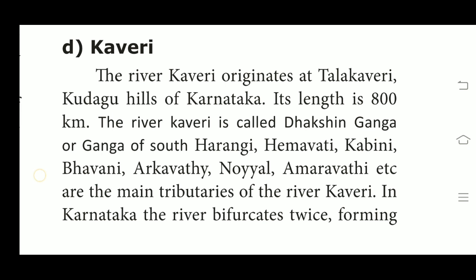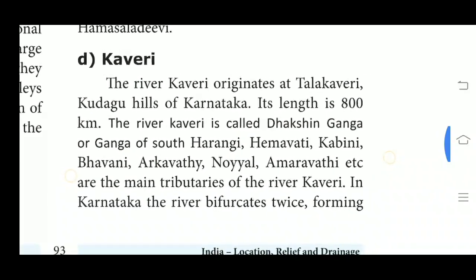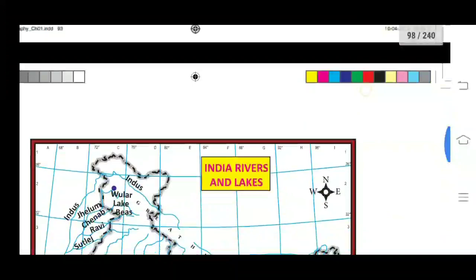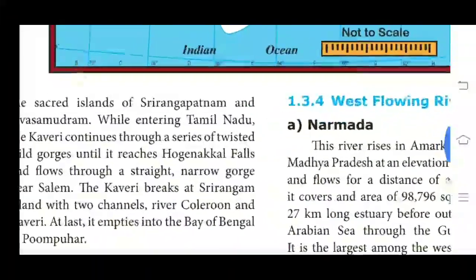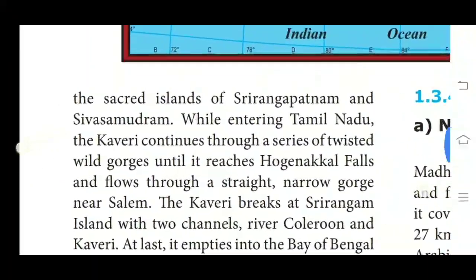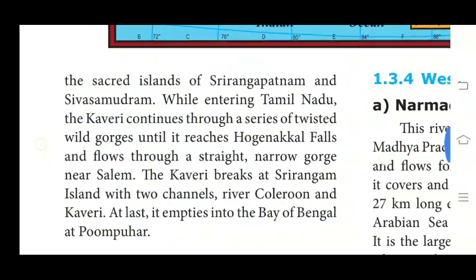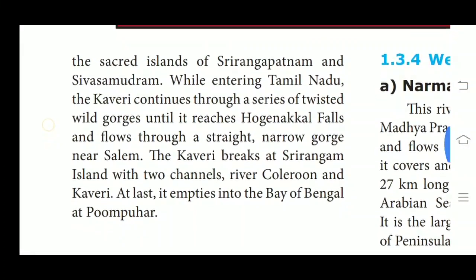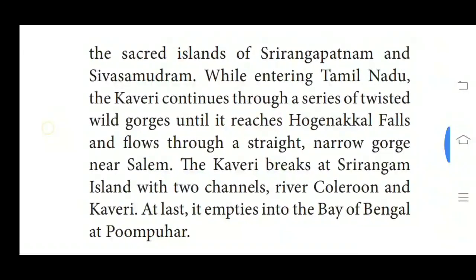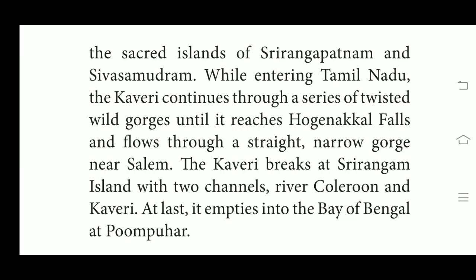In Karnataka, the river bifurcates twice, forming the islands of Srirangapatna and Sivasamudram. While entering Tamil Nadu, the Kaveri continues through a series of valleys until it reaches the falls and flows through a straight narrow gorge near Salem. The Kaveri breaks at Srirangam Island into two channels — Kollidam and Kaveri. At last, it empties into the Bay of Bengal at Poompuhar.